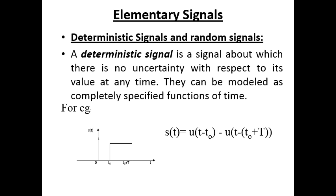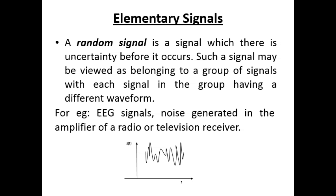Next, we have deterministic and random signals. A deterministic signal is one about which there is no uncertainty with respect to its value at any time; it can be modeled as a completely specified function of time. A random signal is one for which there is uncertainty before it occurs; it may be viewed as belonging to a group of signals each with a different waveform. For example, noise generated in the amplifier of a radio or television device.